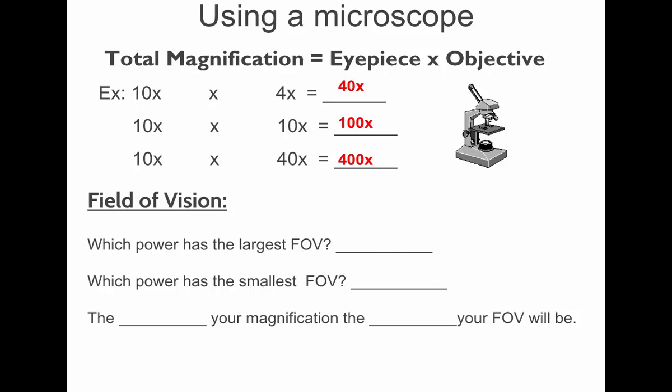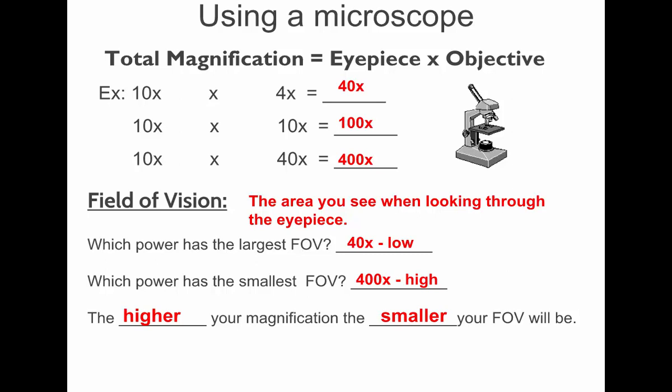Which of those powers gives you the largest field of view? Jordan? 40. 40, low power. And high power gives you the smallest field of view. So the rule is as you increase the magnification, you decrease the field of view. The more you're zooming in, the less you're going to see.